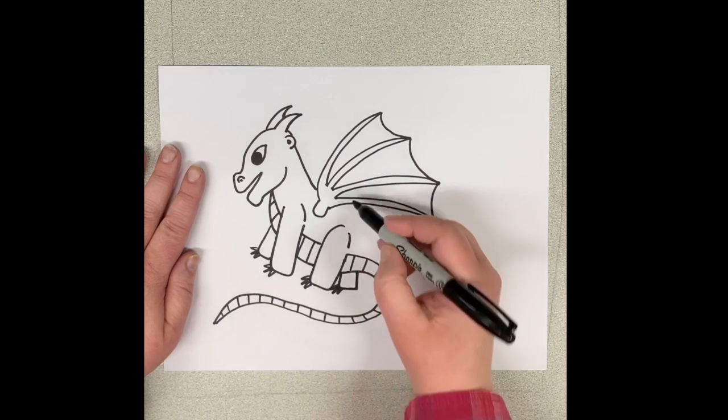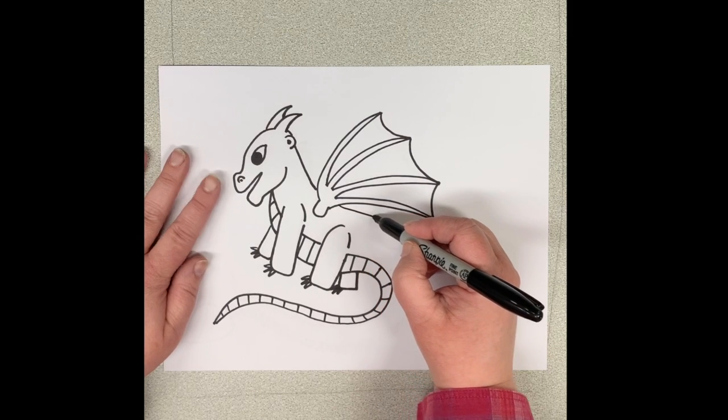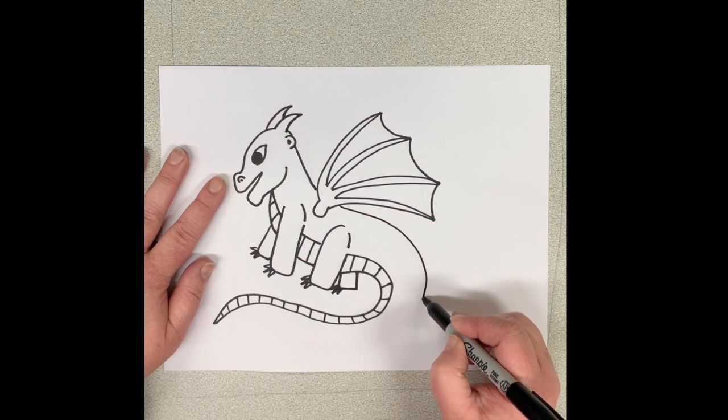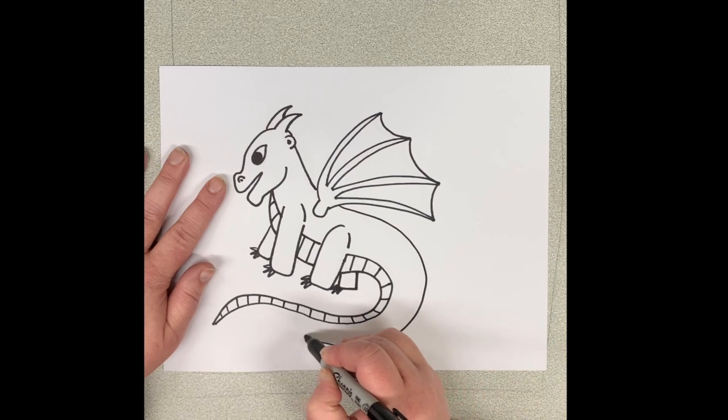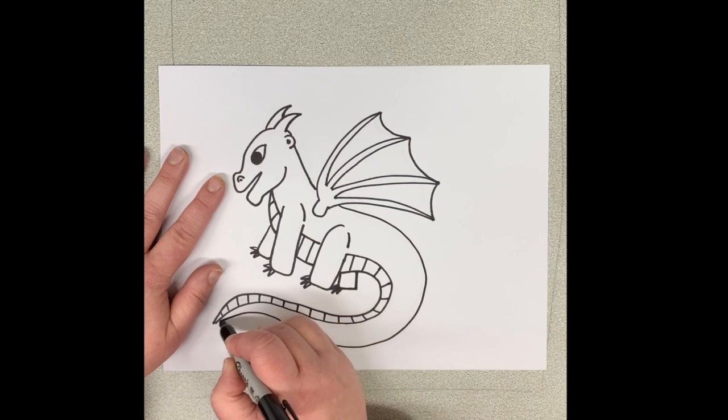Next we're going to add his back and the top of his tail. And it's going to follow the same sort of curved line. And it just gets skinnier and skinnier until it reaches the point of his tail.